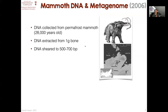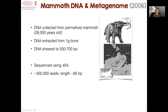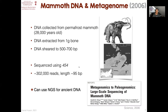We all know the answer today, but back then it was not known. The first paper to look into this was a paper on mammoth DNA — can we sequence DNA from a mammoth bone that is 28,000 years old, preserved in permafrost? This was explored using 454 sequencing, and 300,000 reads were collected of length 95 base pairs. Back then that was a large number of reads. It was shown that yes, 50% of the reads could be shown to be mammoth DNA.